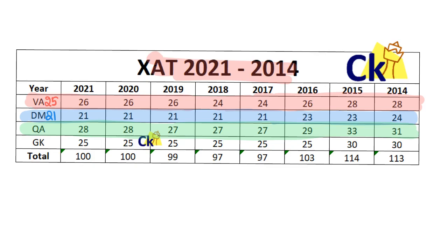Every year they give a total of 100 questions. I'm not sure about this year — please comment in the comment box. I'll pin the top comment. Individual section-wise, they normally don't announce the breakdown. This will give you an idea about the number of questions coming in each section. Same for GK — 25 questions every year.